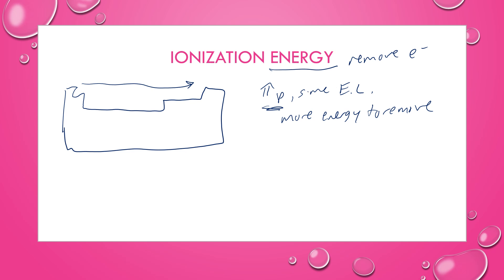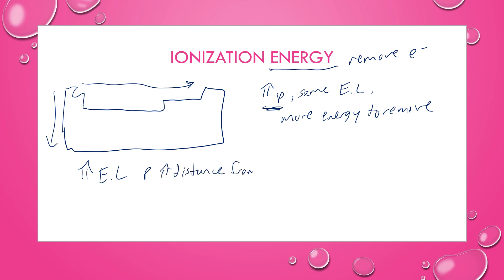When looking at a group, you're going to have more energy levels as you go down. That means the protons are a greater distance from the valence electrons. The further away the protons are, the easier it is to remove that valence electron. So as you go down a group, it takes less energy to remove the first electron, because the coulombic attractions of the protons to the valence electrons are weaker due to the greater distance.